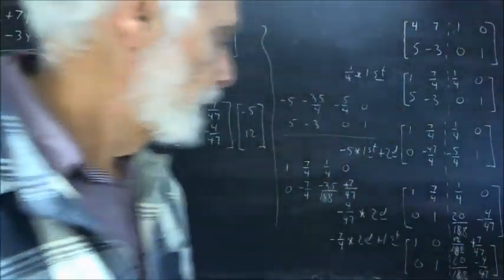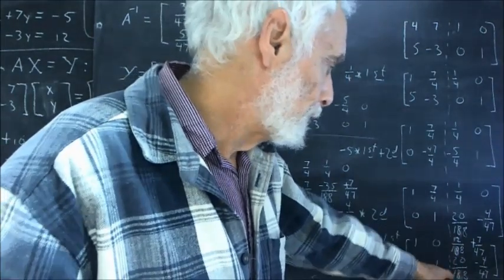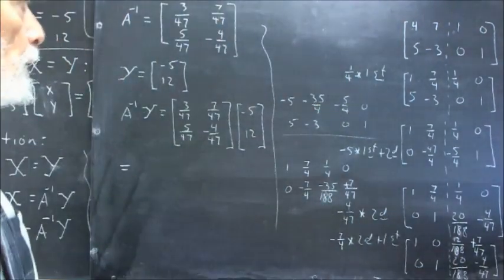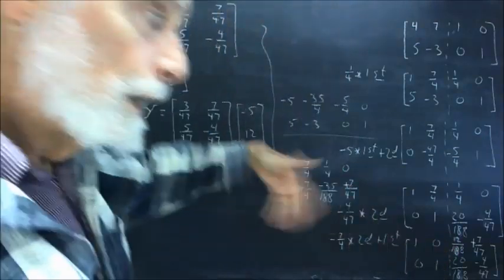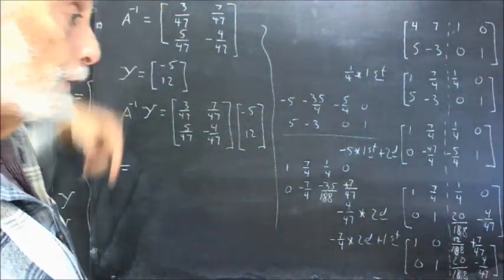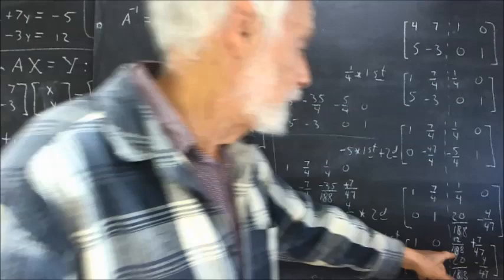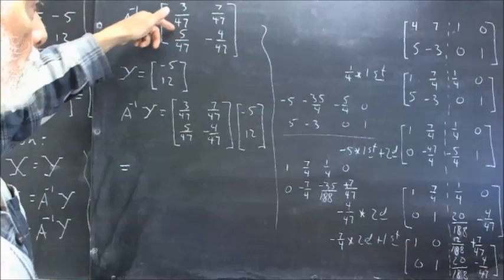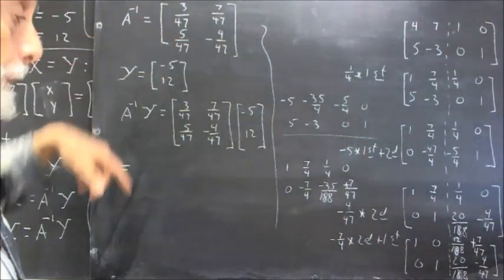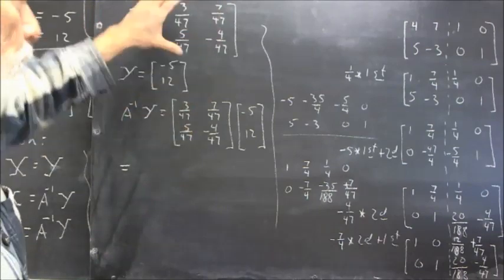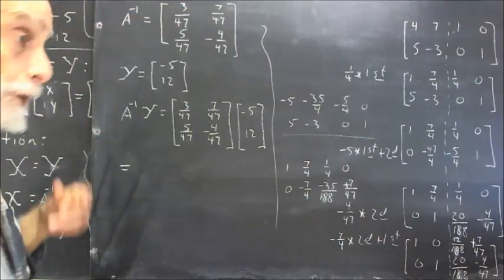Okay, we've found our A inverse matrix, and a couple of these fractions can clearly be reduced. It turns out that if we reduce 12 over 188, we get 3 over 47, and if we reduce 20 over 188, we get 5 over 47. So I've written the inverse matrix, and it's reduced, with the fractions reduced to lowest terms.